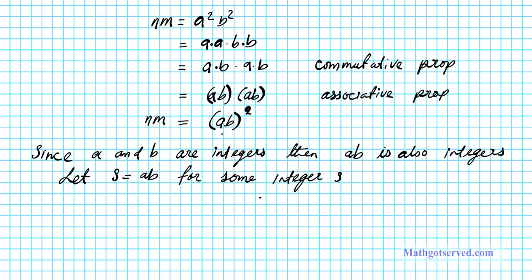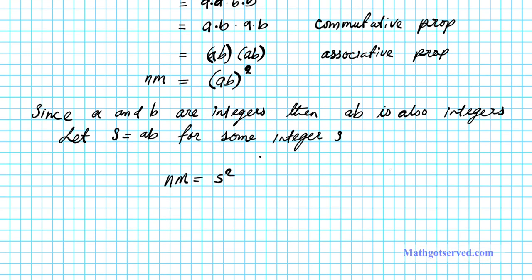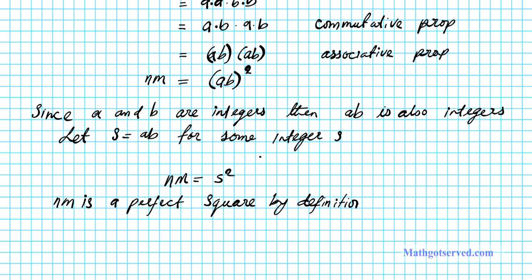So if I make the substitution of ab with s into this equation, I will have nm is equal to s squared. So if nm is equal to s squared for some integer s, this is the definition of a perfect square. Therefore nm is a perfect square by definition. We can conclude that nm is in fact a perfect square. So that concludes our proof.